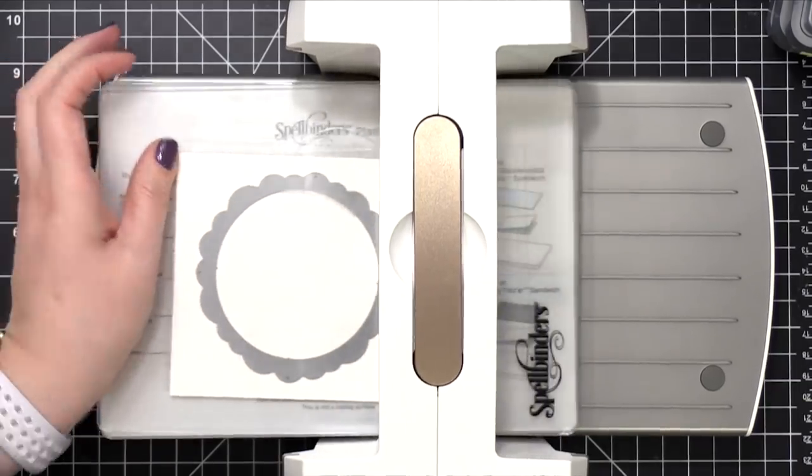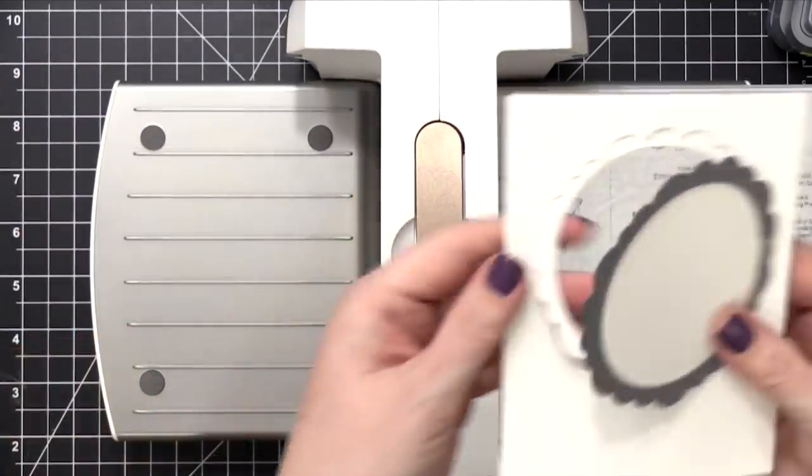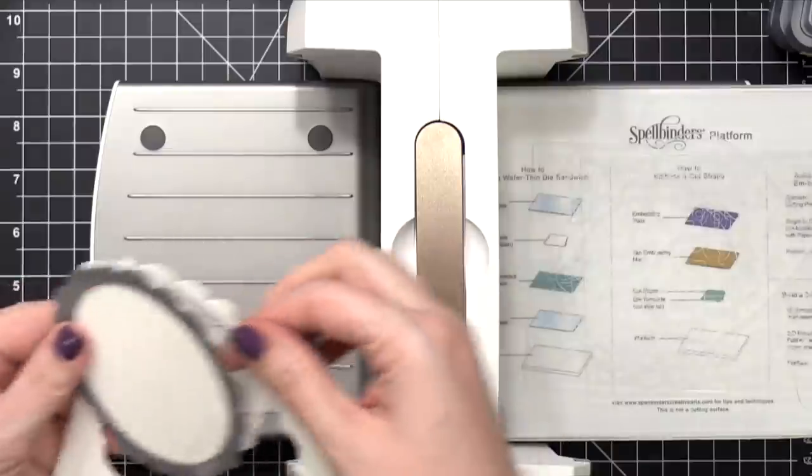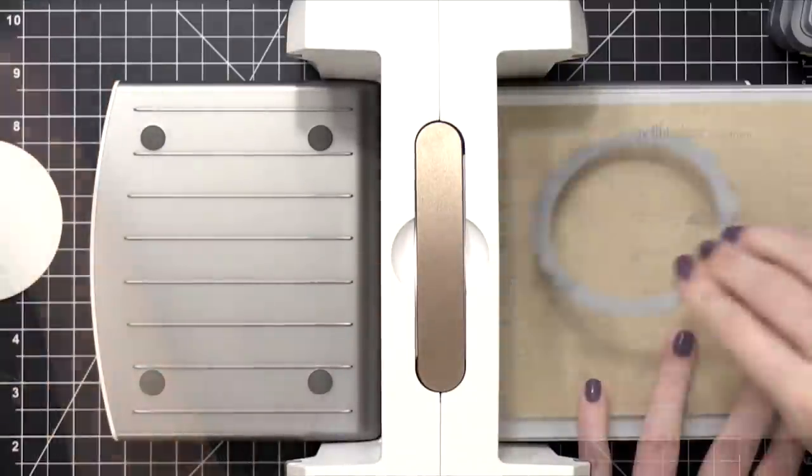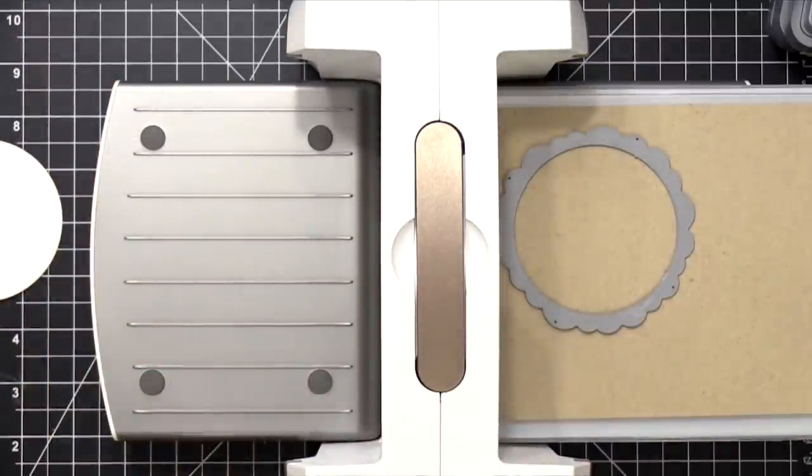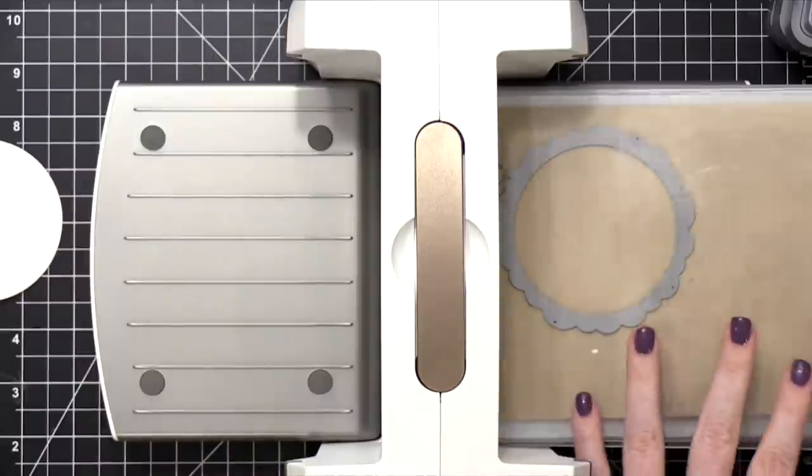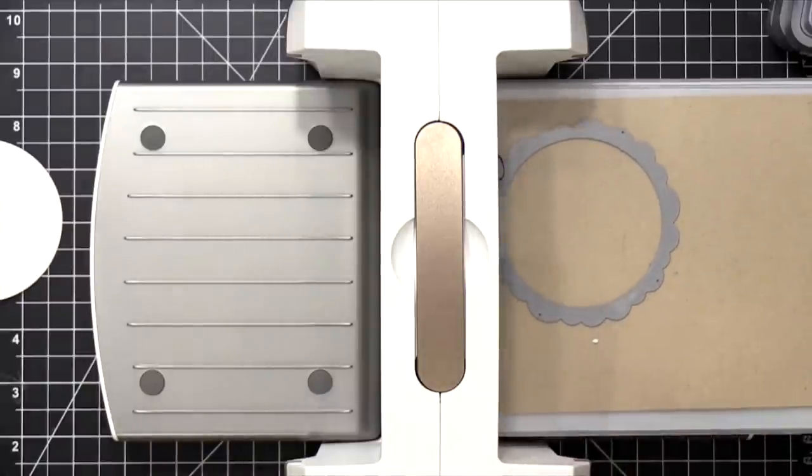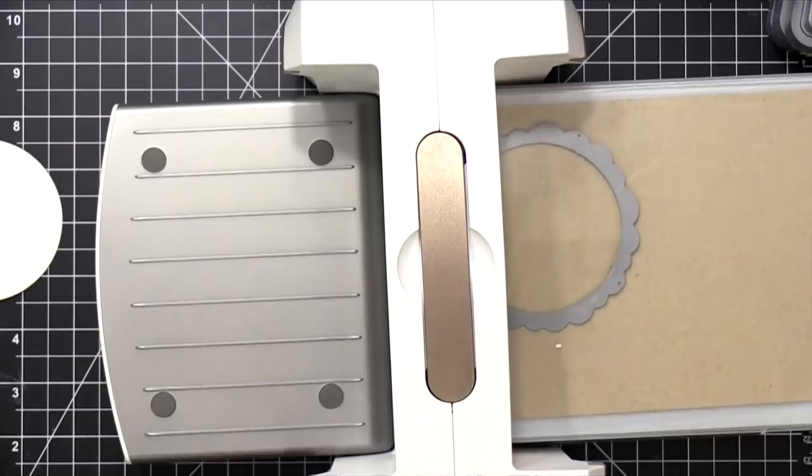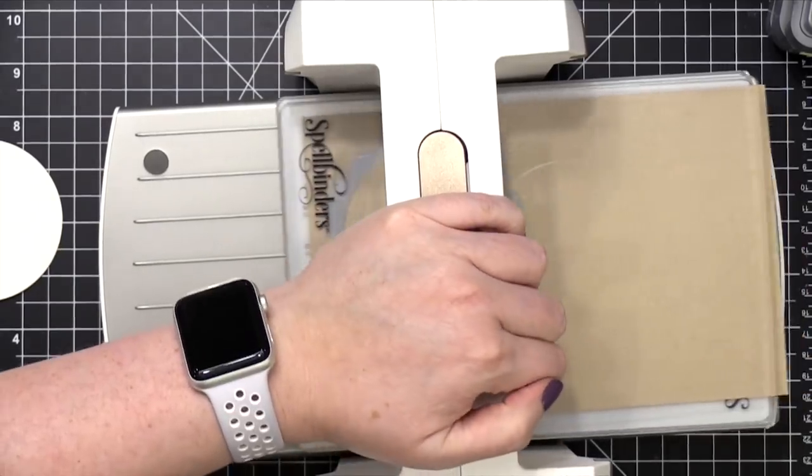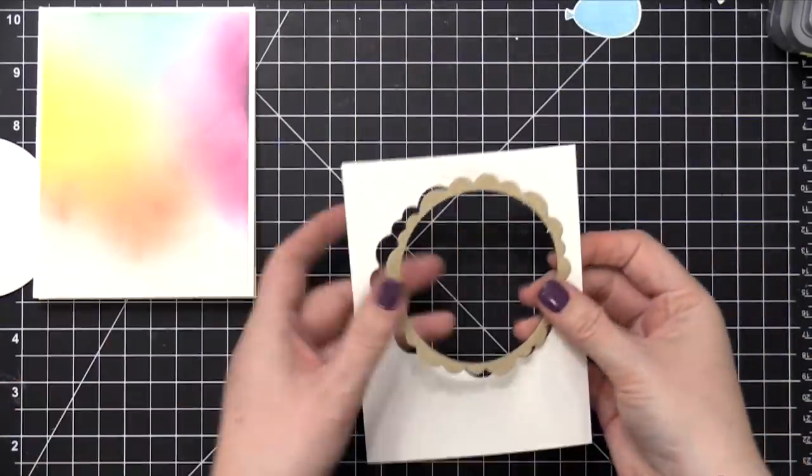I'm gonna use this Platinum Six die cutting machine from Spellbinders to cut it out of some white cardstock. And then I'm also going to cut this frame out of some Neenah Environmental Desert Storm cardstock. I will eventually change the color of cardstock I'm using for this frame, but for now this is what I was using.